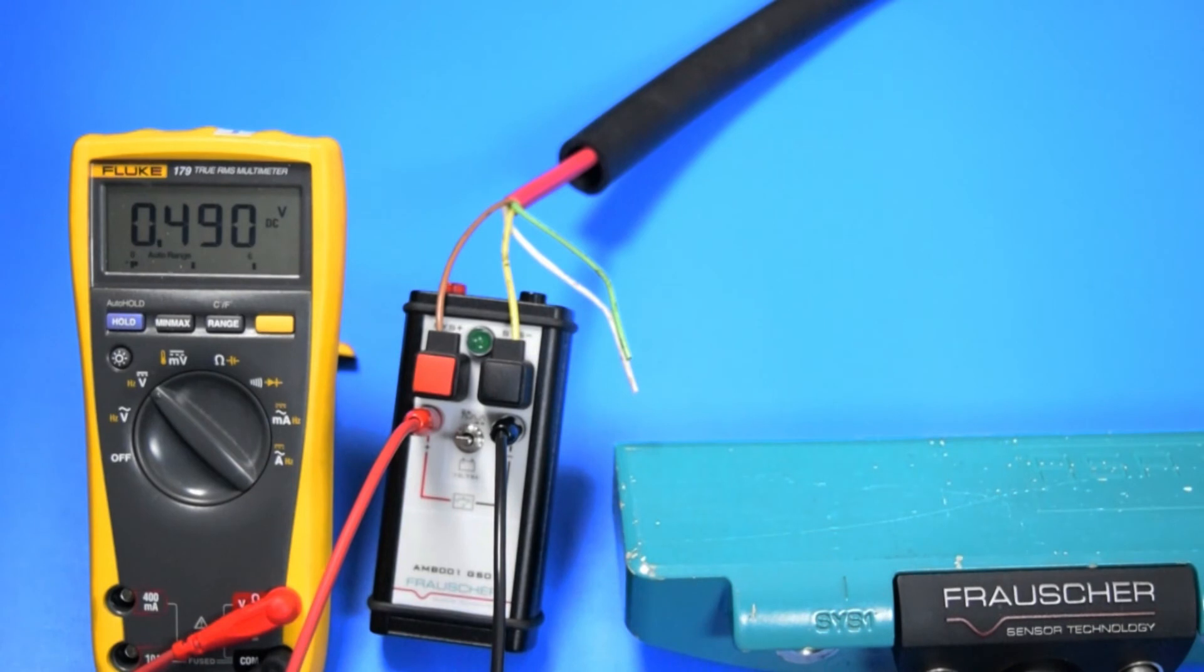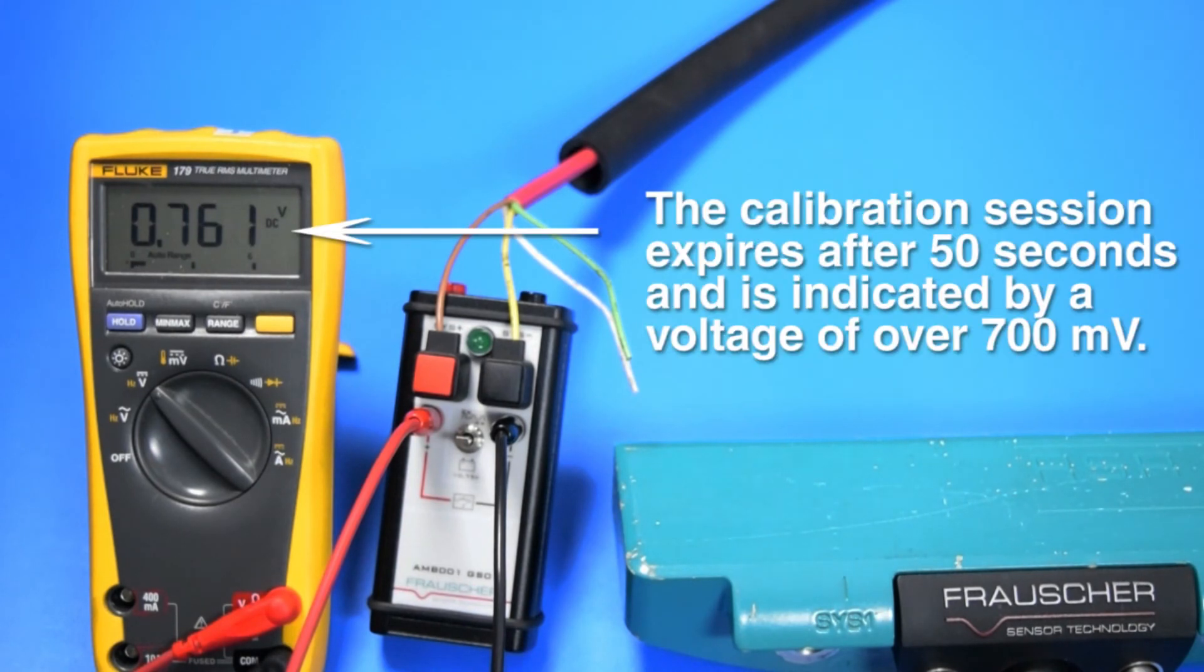Now for illustration purposes, we are showing the sensor returning to its normal working mode after 50 seconds has passed as indicated by the voltage measurement increasing to more than 700 millivolts.